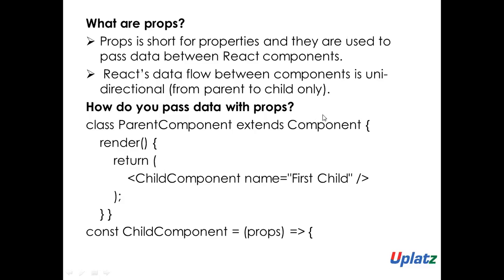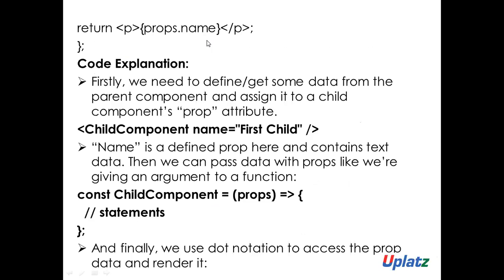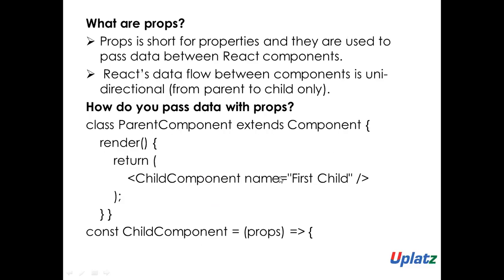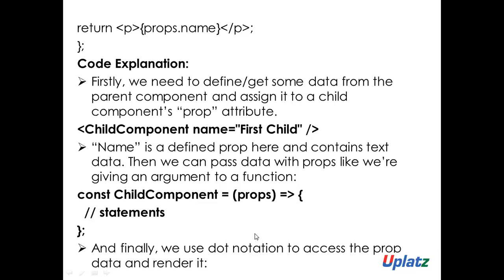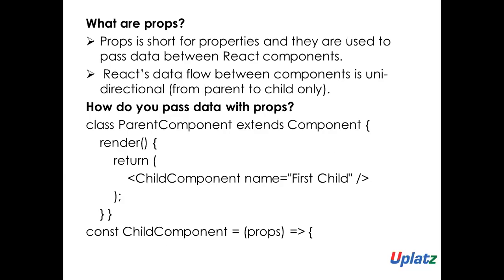I'm extending my parent component from Component, which is like a class in JavaScript. I'm returning a child component named 'first child'. The child component receives props, and I'm just returning props — meaning whatever child component name I gave, 'first child', that will be rendered. This is the actual way of using props in a parent component. If this is a parent component, I can set a state so that particular state variable I can use in another component as a prop.